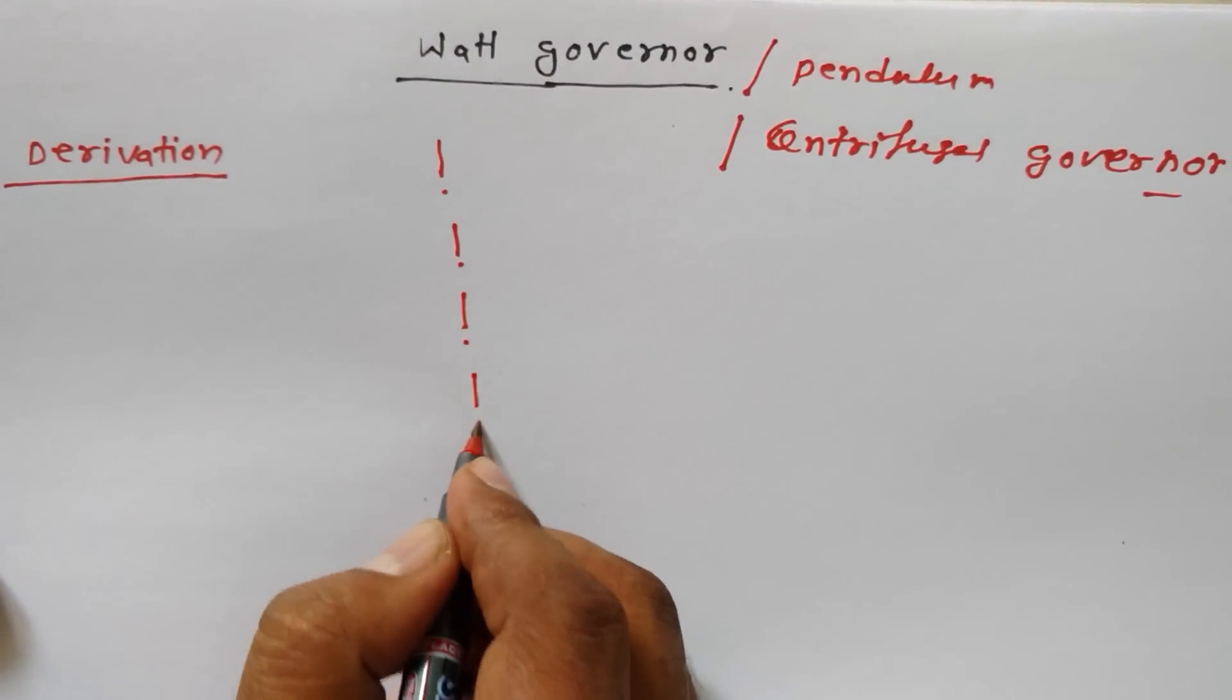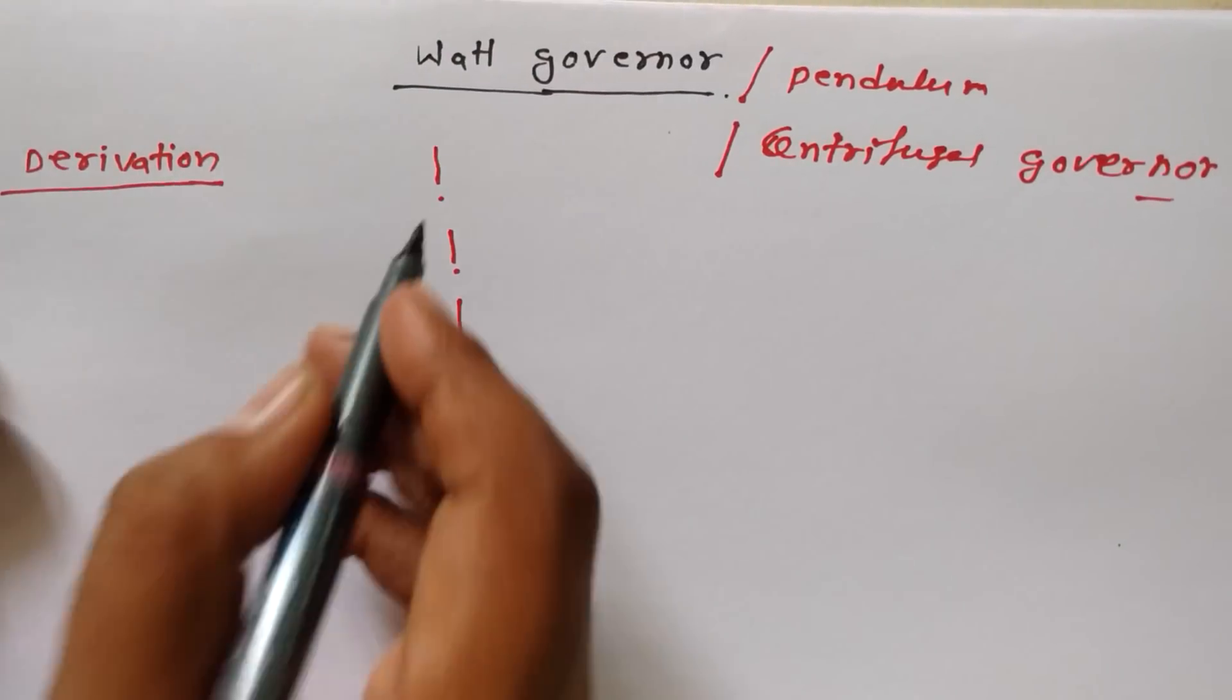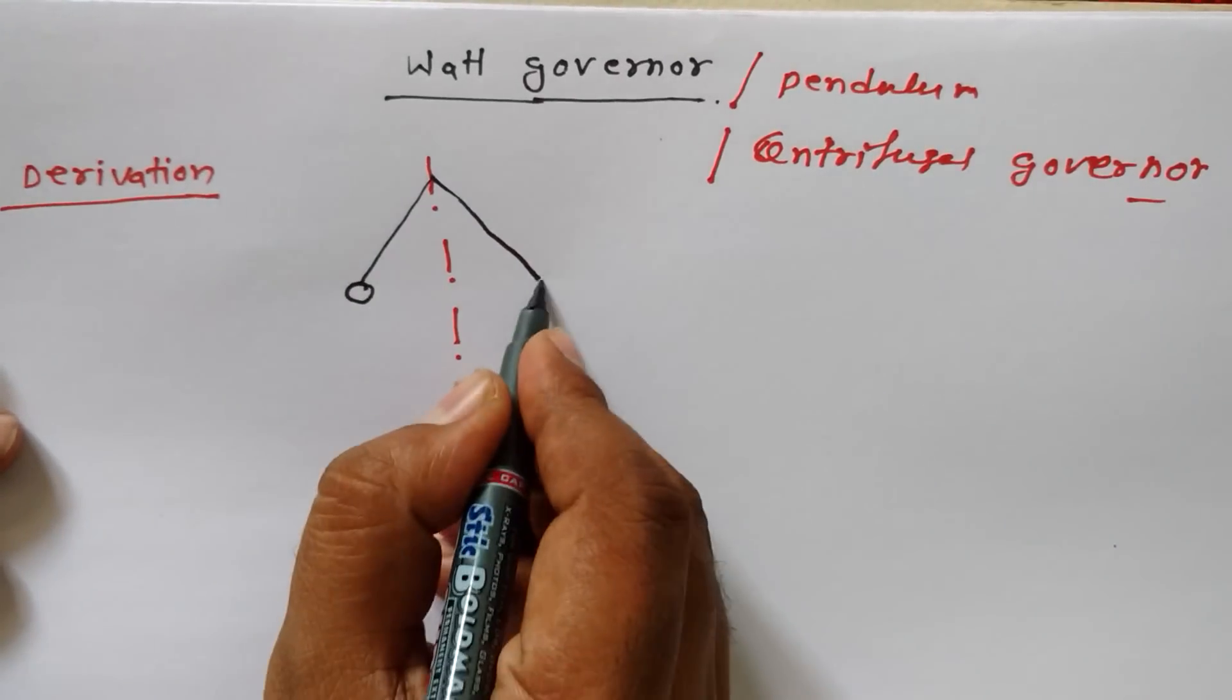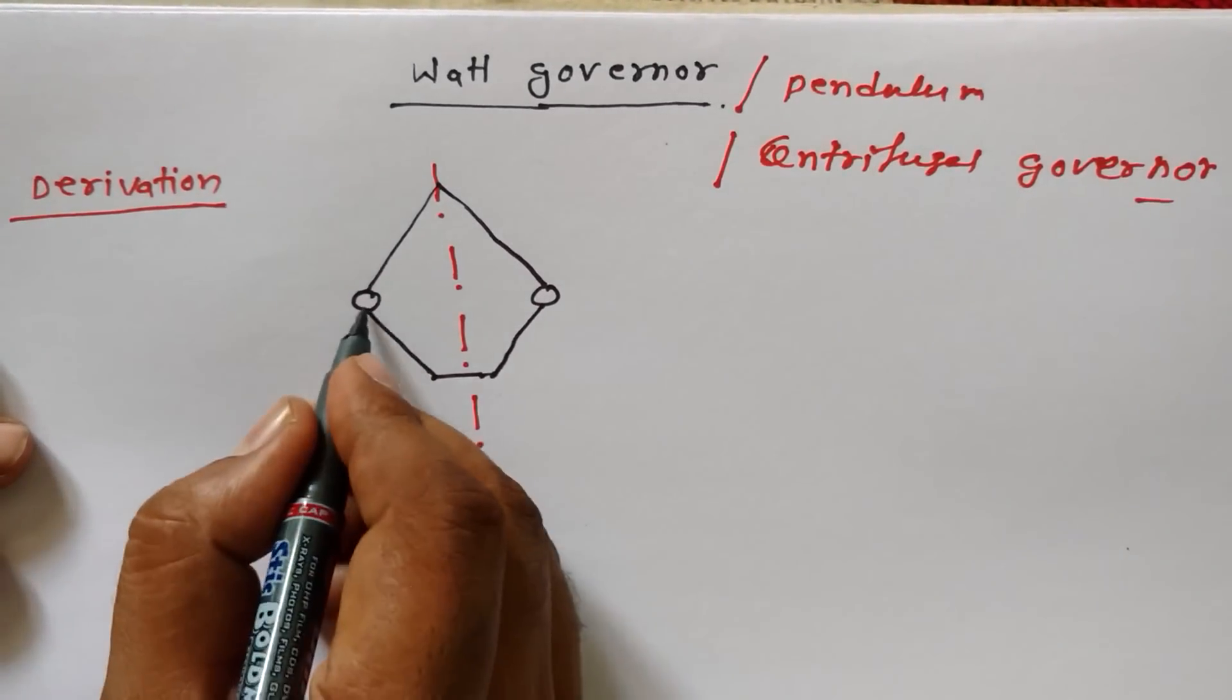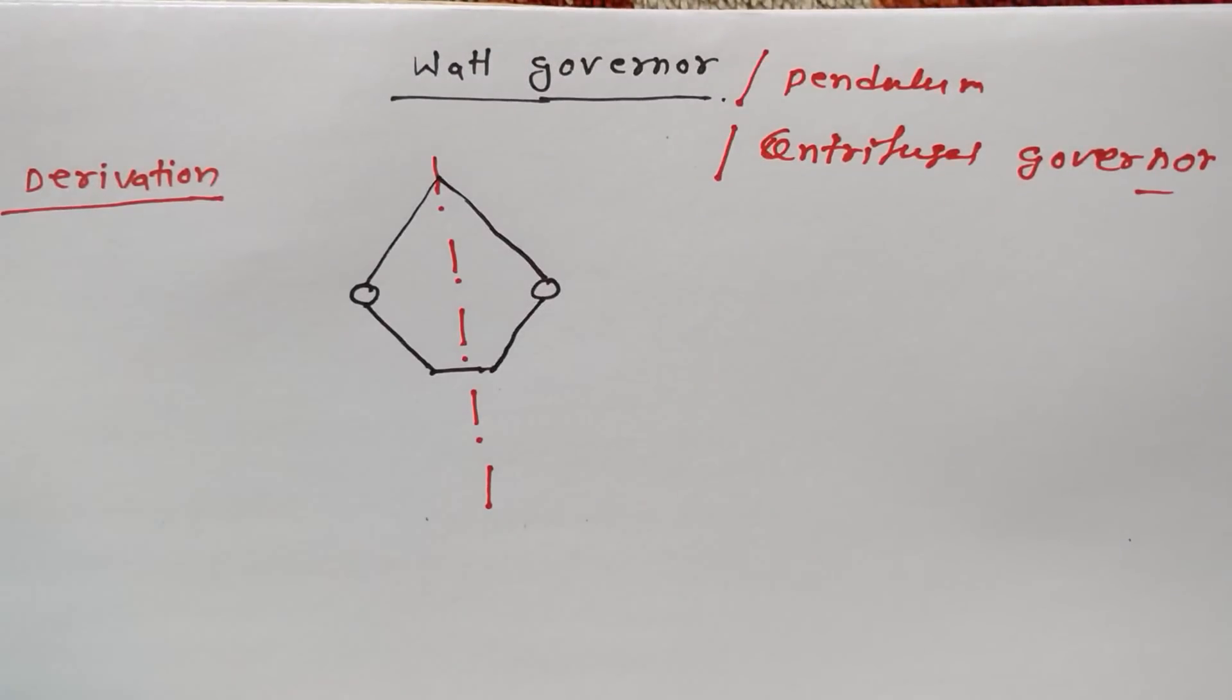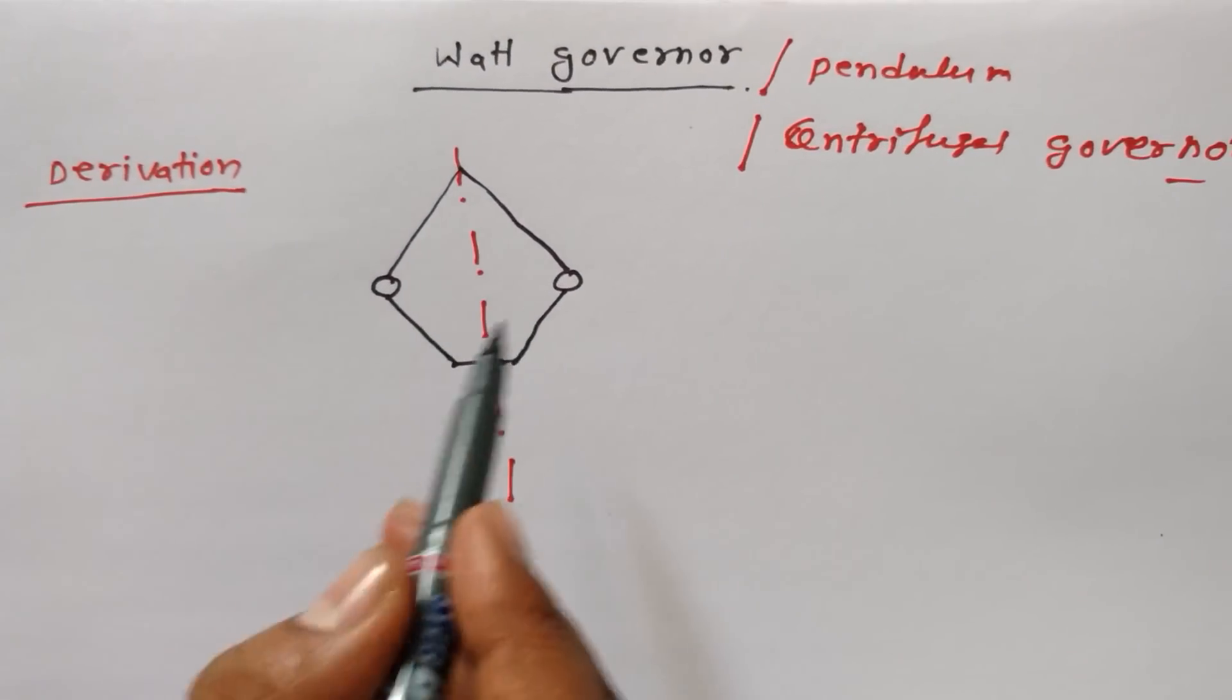To draw a diagram, first draw a center line, then draw like this. Put two balls here because Watt Governor has two balls, and then the sleeve. These two balls - this is a centrifugal governor, so it will revolve like this. The ball masses act outward.